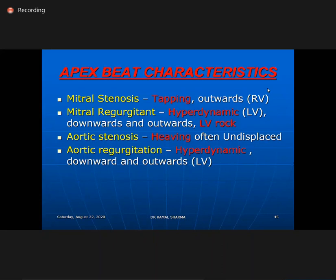In severe AS, the apex beat does not move unless LV dysfunction supervenes. In AR, the apex goes down and out. In MR, it goes down and sometimes out. In mitral stenosis, it goes outwards only when RV is involved. Apex beat at 12 cm in the 5th space suggests MS. Apex beat in the 7th or 8th intercostal space at 12 cm suggests AR or sometimes MR with LV dilatation.